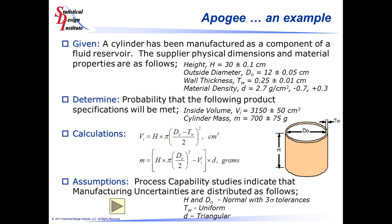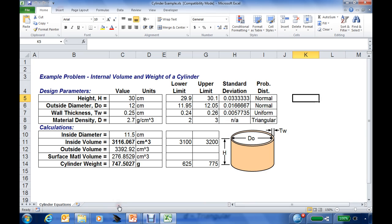What we'll be considering in this analysis is how well we can reproduce each one of the design parameters — height, outside diameter, wall thickness, and material density — based on determined process capabilities. We'll be using a normal distribution assumption for the height and the outside diameter, a uniform distribution assumption for the wall thickness and for the material density, and a triangular distribution for the uncertainty. So let's go to our worksheet and examine the analysis to predict performance.